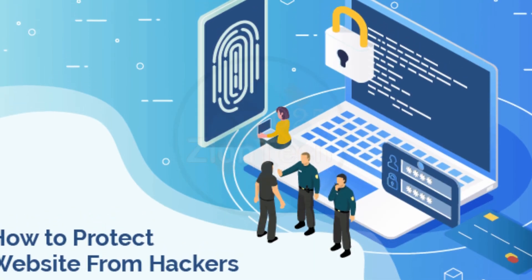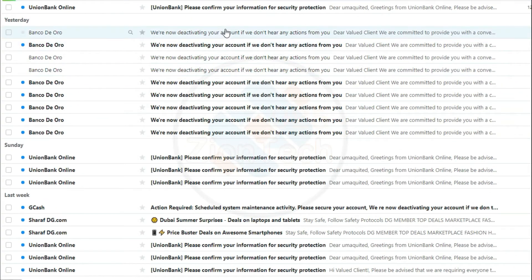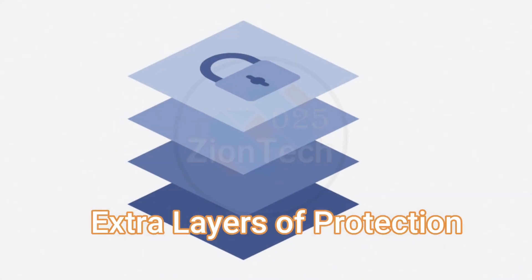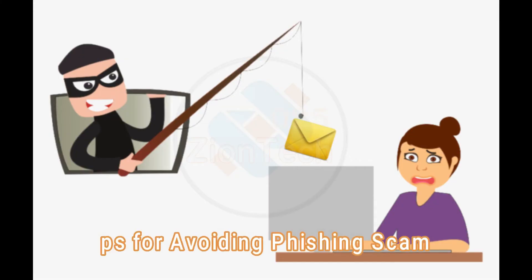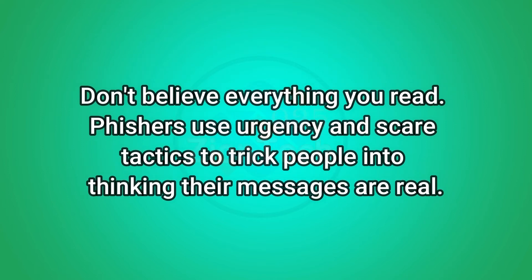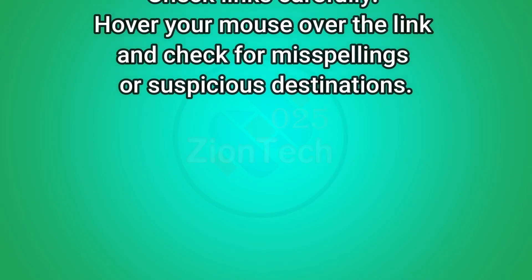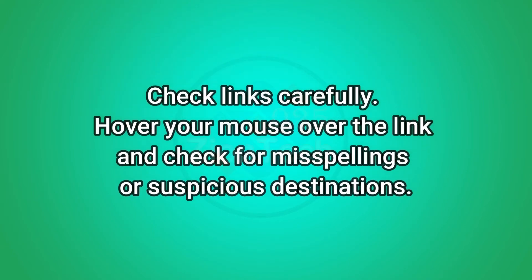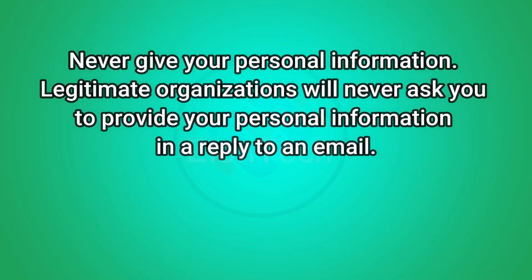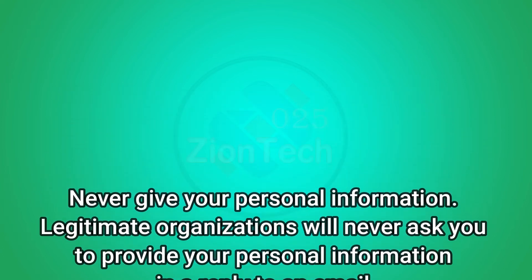How to protect yourself from phishing attacks. Your email spam filters may keep many phishing emails out of your inbox, but scammers are always trying to outsmart spam filters, so it's a good idea to add extra layers of protection. Tips for avoiding phishing scams: Don't believe everything you read — phishers use urgency and scare tactics to trick people into thinking their messages are real. Check links carefully — hover your mouse over the link and check for misspellings or suspicious destinations. Never give up personal information — legitimate organizations will never ask you to provide your personal information in a reply to an email.